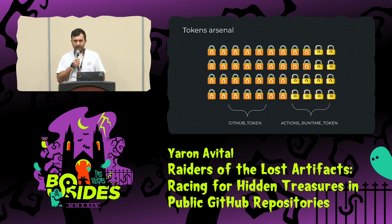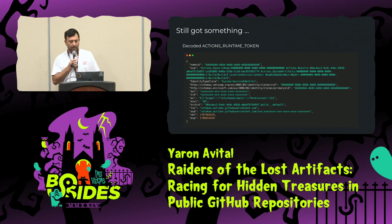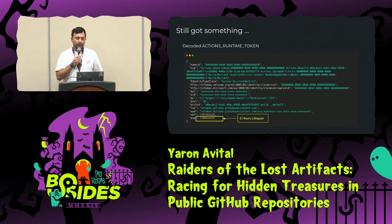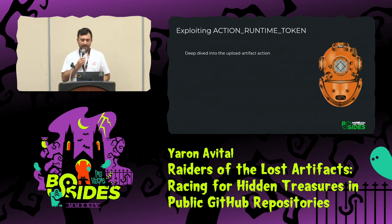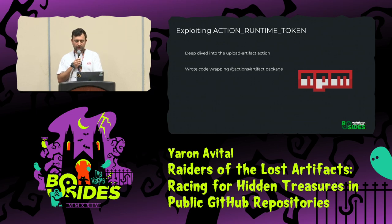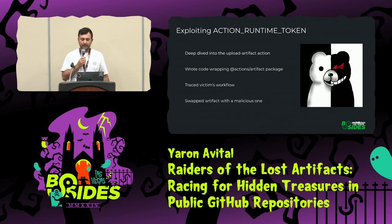From the majority of tokens I got, I lost most of them. But I still had the Actions Runtime Token. Looking at the decoded part of the JWT token, I noticed the expiration time was six hours — which is plenty of time to commence an attack. So this is what I did: a deep dive into the upload artifact action. I wrote code that wraps the logic of the upload artifact, traced the victim's workflow — remembering I had six hours — and swapped the artifact with a malicious one.